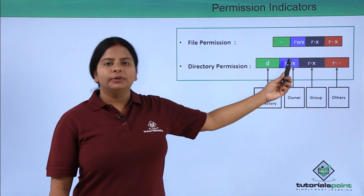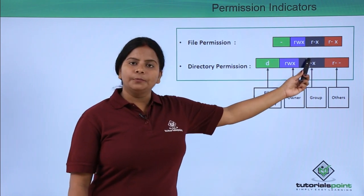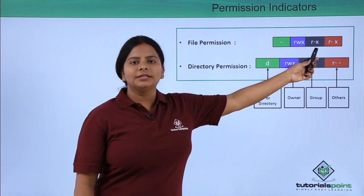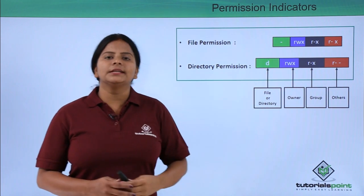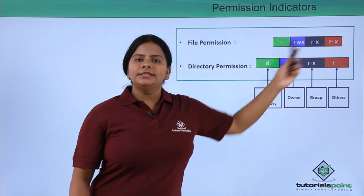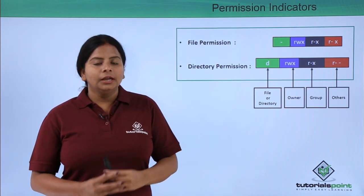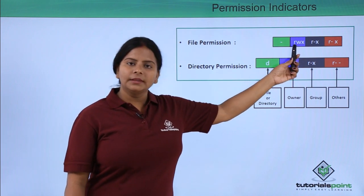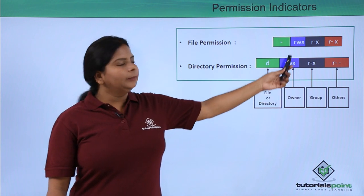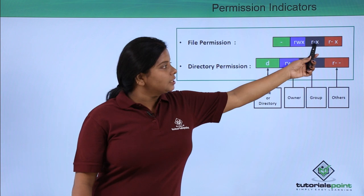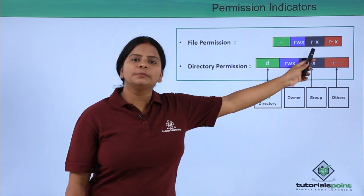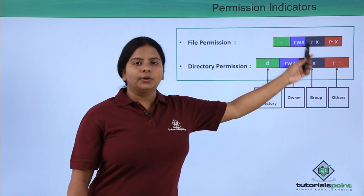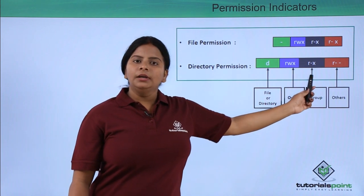Similarly, read, write, and execute applies for the directory. The second three-bit block is for the group — the owner can add multiple users into the group, and this block shows their permissions, such as read and execute. If 'w' is missing, it means no write permission is assigned. The third three-bit block is for others — public permission — showing read and execute. So this 10-bit structure uses one bit to identify whether it is a directory or a file, three bits for owner, three for group, and three for others.